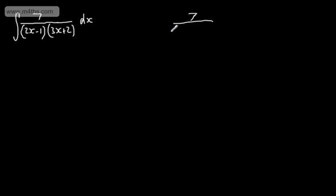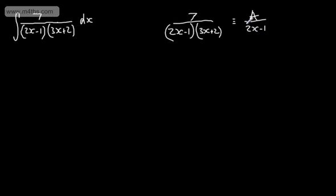So using partial fractions — which I'm assuming you have an understanding of — with 2x minus 1 multiplied by 3x plus 2 in the denominator, we will set up an identity: a over the quantity 2x minus 1 plus b over the quantity 3x plus 2. If you're not familiar with partial fractions, please check out my site, as that is absolutely essential for this section of integration.